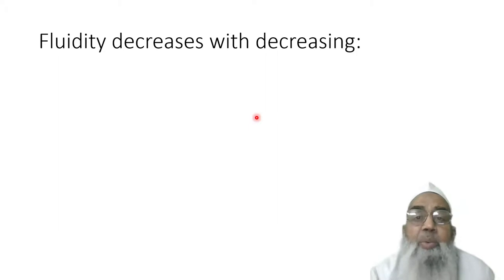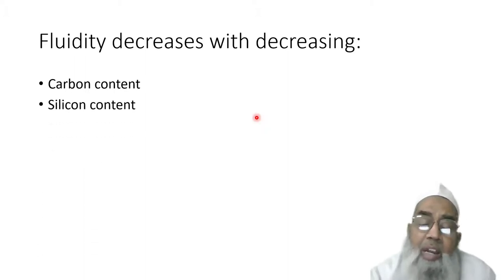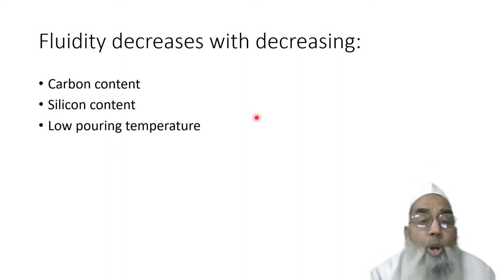Fluidity decreases with decreasing carbon content and silicon content. Low pouring temperature will reduce fluidity. For hyper eutectic iron, fluidity increases with increasing carbon.